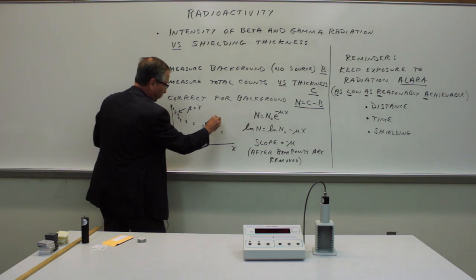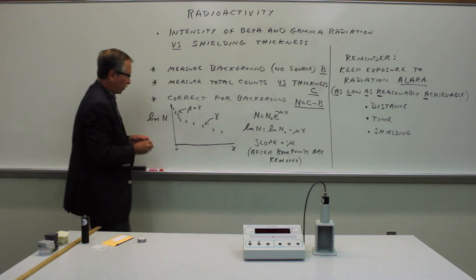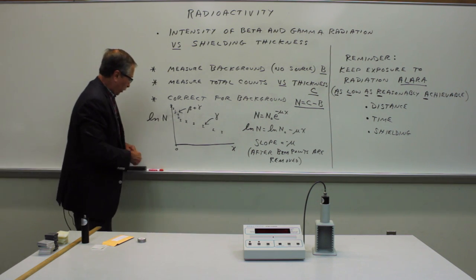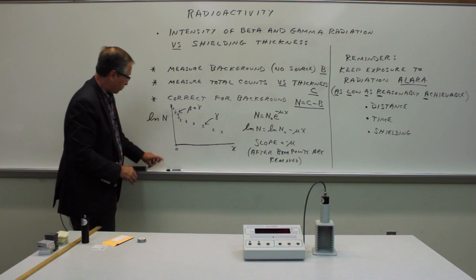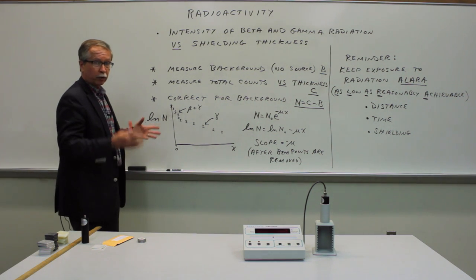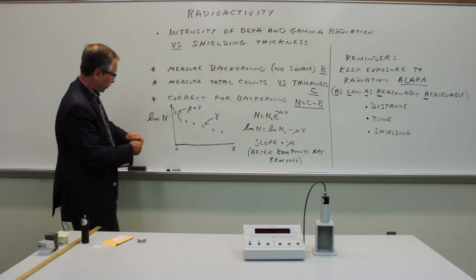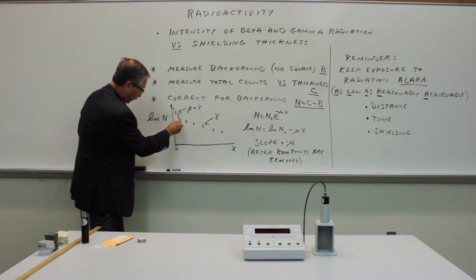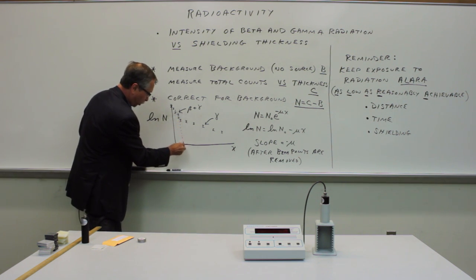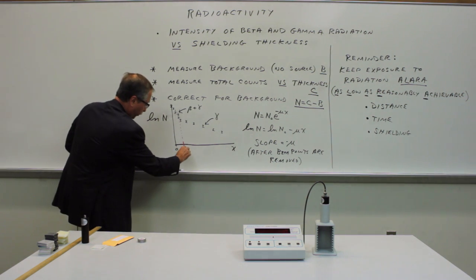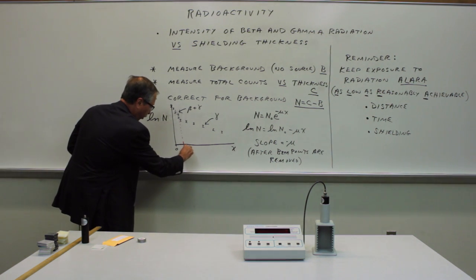So the latter portion is just gamma. And what we'll do is come up with a technique for doing the measurements and doing the analysis in such a way that you will discover exactly how much thickness is required to stop the betas. We'll call this the range of betas R.